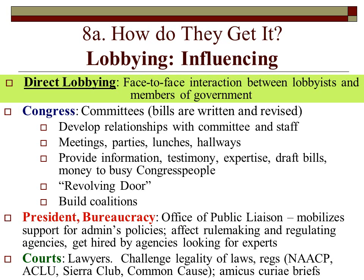Outside of the legislative branch, there's lobbying to influence the presidency and the bureaucracy. There's an office of public liaison whose job is to mobilize support for the administration's policies — essentially a whole office of professional lobbyists. Lobbyists also affect rulemaking and regulatory agencies. If there are regulations about how many parts per million of carbon can be in the air, there will be lobbyists at those regulators' desks to influence that particular rulemaking. Lobbyists also get hired by agencies looking for experts.